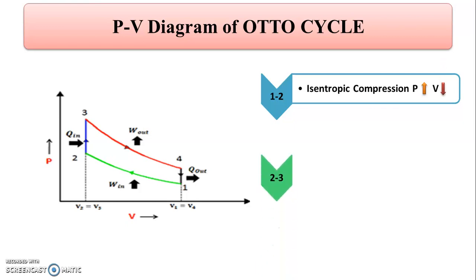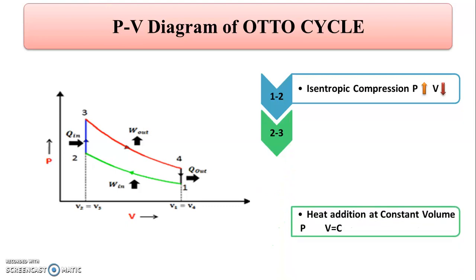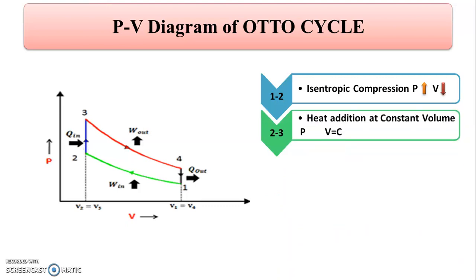Process 2 to 3 is heat addition at constant volume. As heat is added at constant volume, V equals constant, meaning V2 is equal to V3, and the pressure increases from P2 to P3.